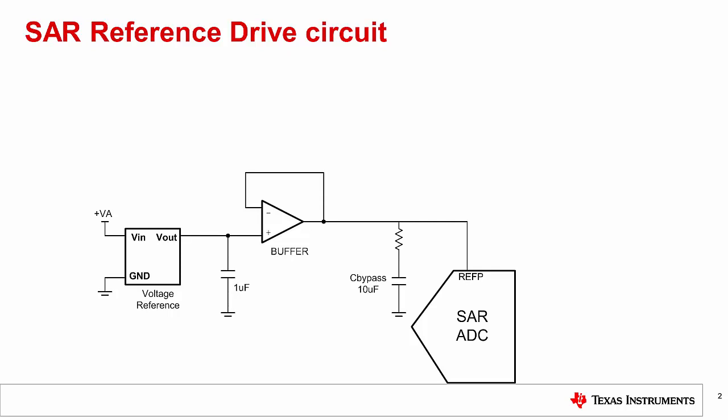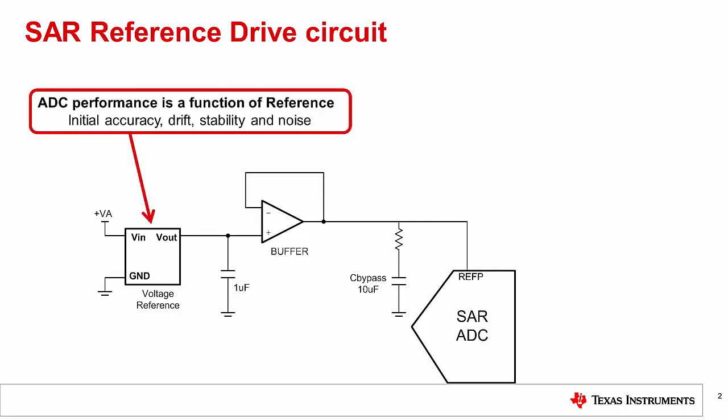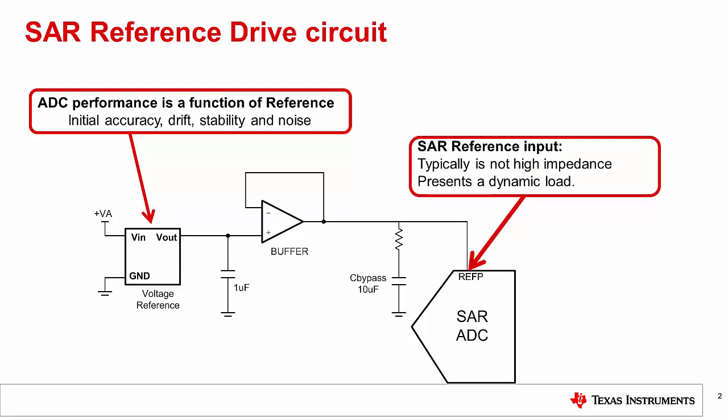Since the ADC performs conversions by comparing the input voltage against the reference, the initial accuracy, drift, stability, and noise of the reference voltage directly affect the accuracy of the conversion results. With a traditional successive approximation register, or SAR ADC architecture, the reference input is the most sensitive, as the reference pin presents a dynamic load to the reference source.